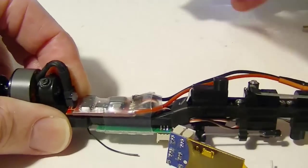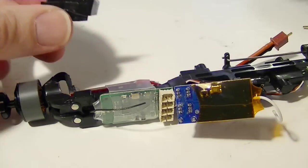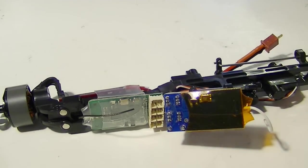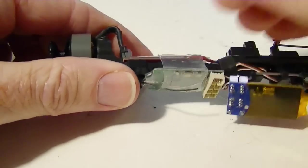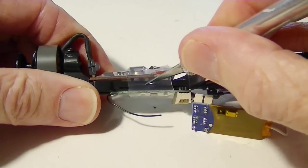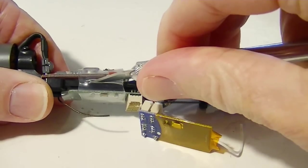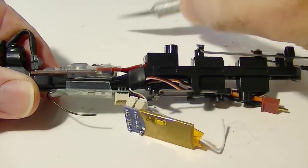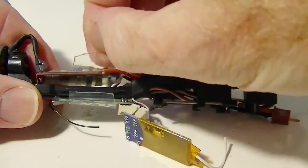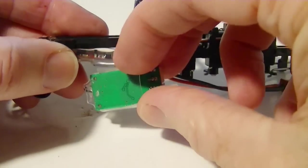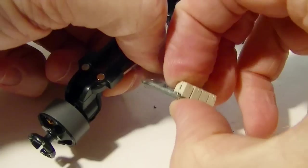Next thing to do is remove this piece of velcro that holds the battery on. We'll have to put another piece on when we're done. Next thing is to cut this heat shrink. Be careful not to draw any blood. You can see the receiver right there - that's what we want. There it is, that's the Tactic receiver.